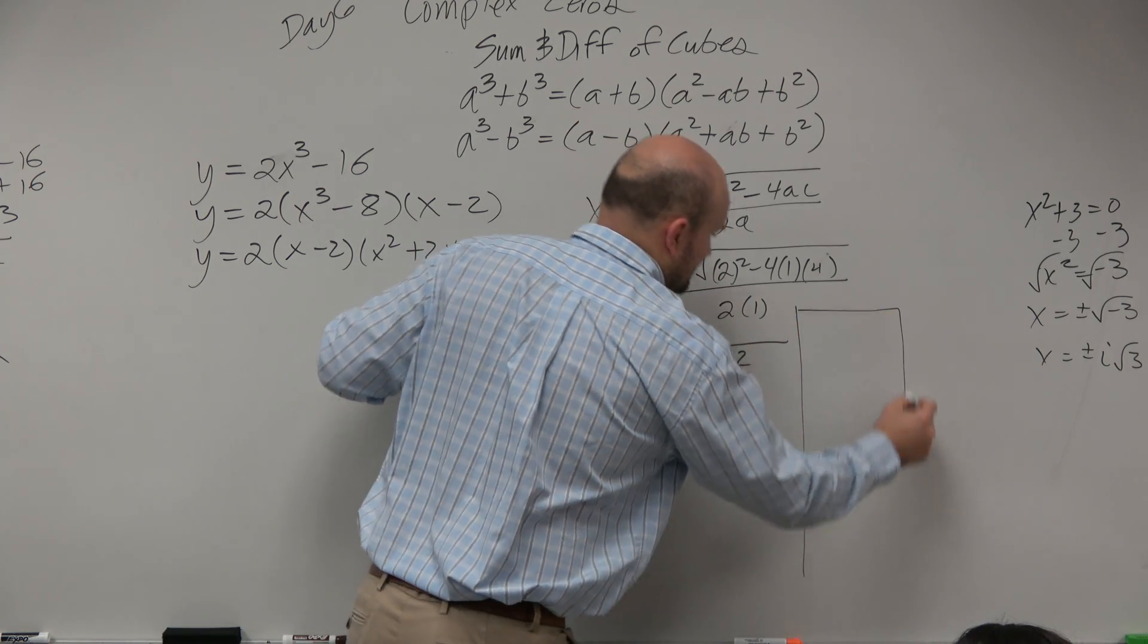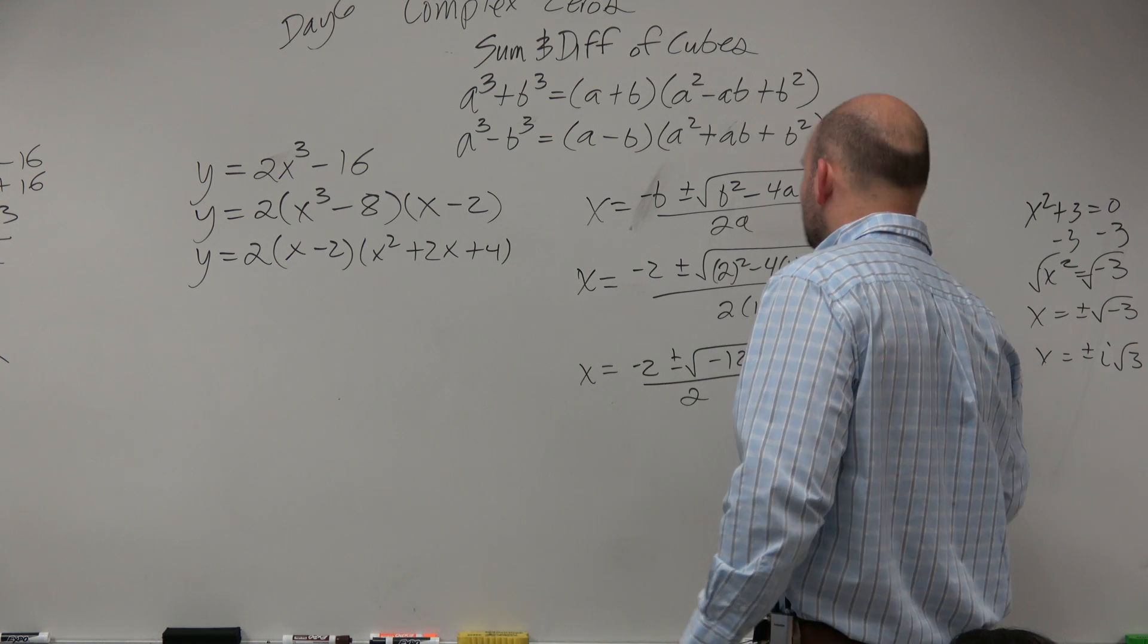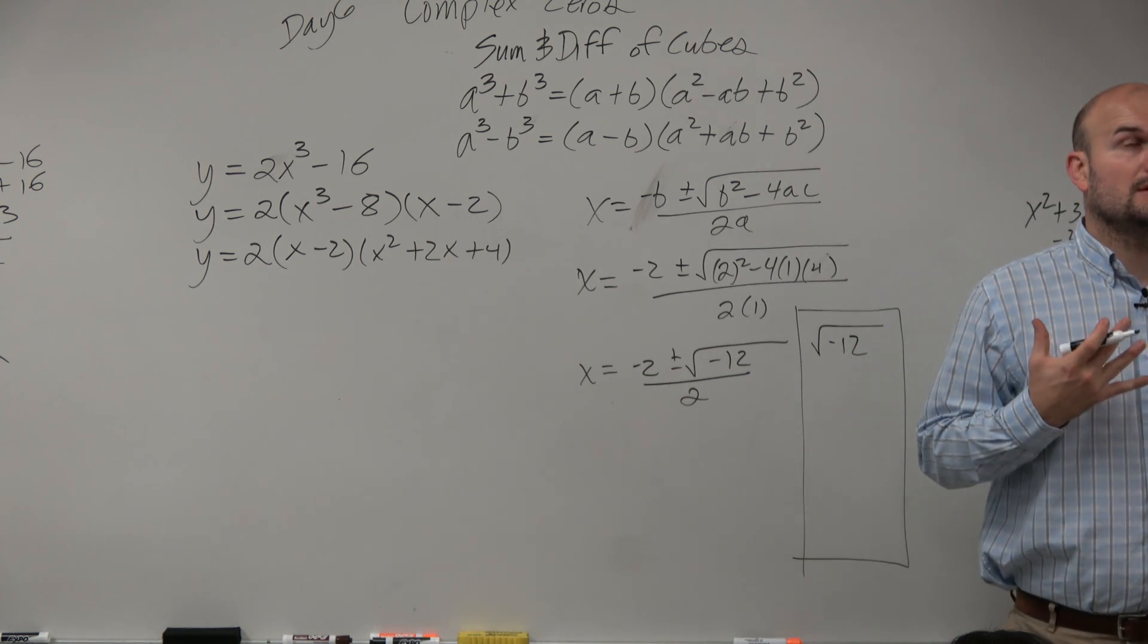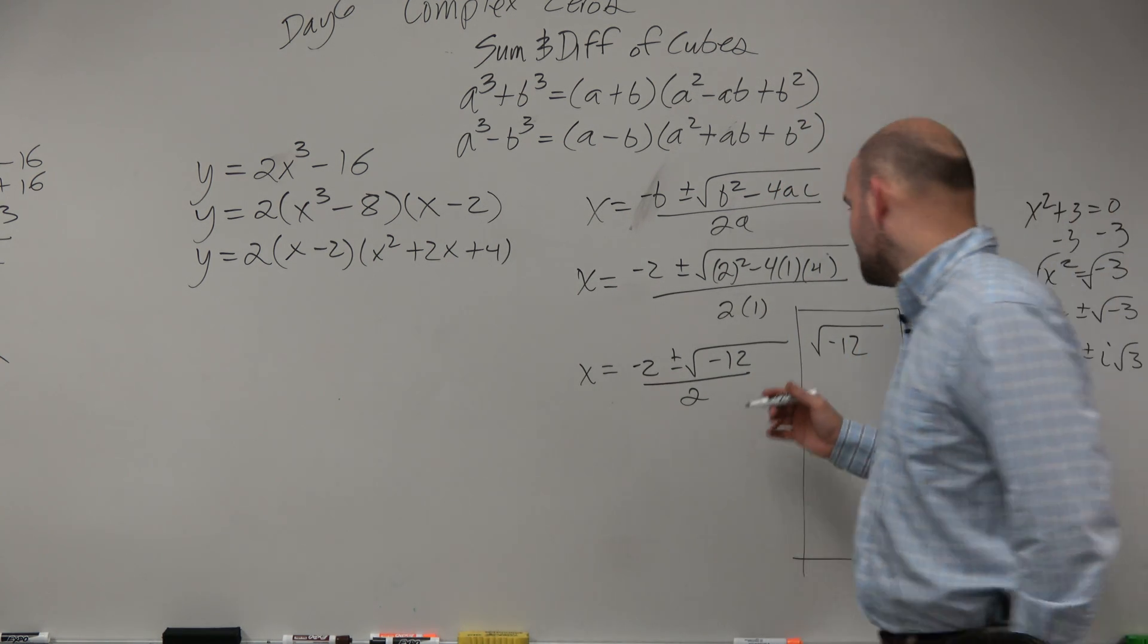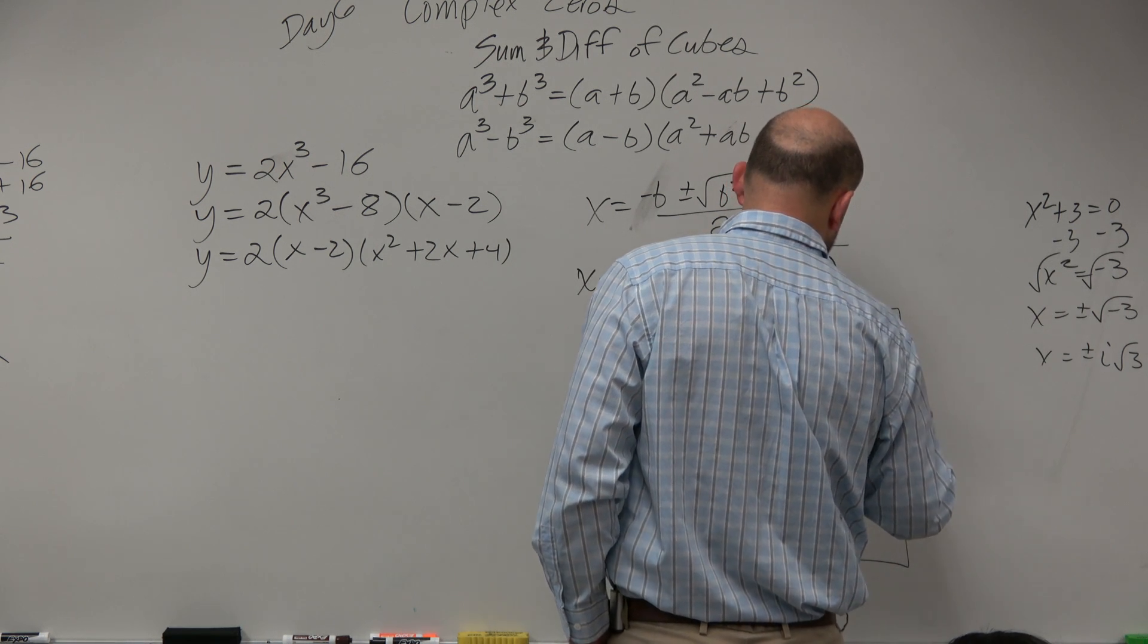Square root of negative 12, square root of negative 12. All right, we know we can rewrite this as negative 1 times 4 times 3.